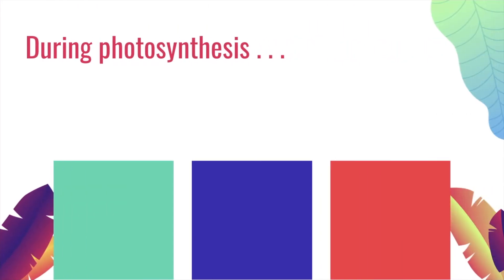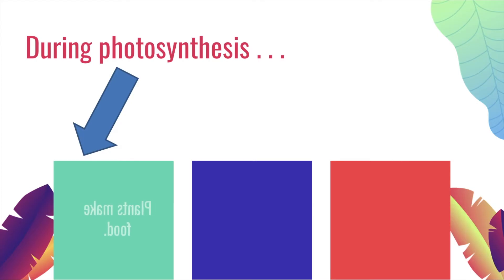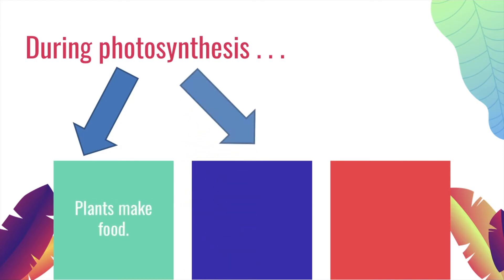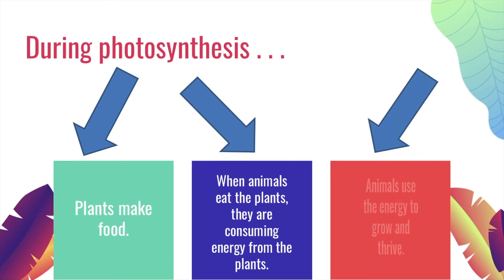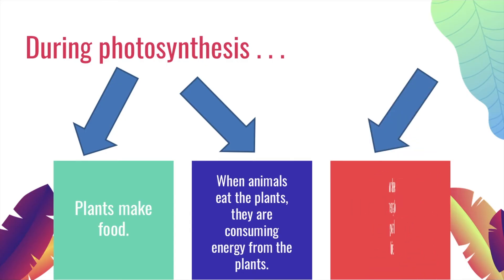During photosynthesis, plants make their food — the energy they need to survive. Then animals eat those plants, so they are consuming the energy from the plants. Animals use the energy to grow and thrive.